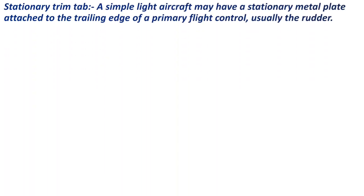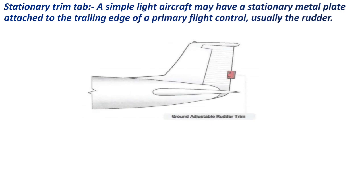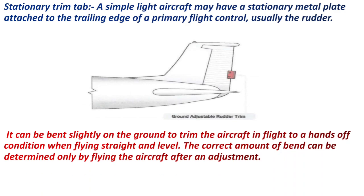A simple light aircraft may have a stationary metal plate attached to the trailing edge of the primary flight control, usually the rudder. There is a stationary trim tab fitted at the trailing edge of the rudder. It can be bent slightly on the ground to trim the aircraft in flight to a hands-off condition when flying straight and level. The correct amount of bend can be determined only by flying the aircraft after an adjustment — you can only adjust the stationary trim tab when the aircraft is on the ground.